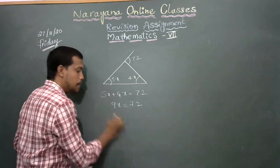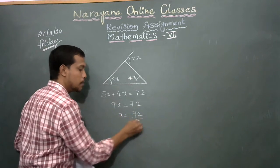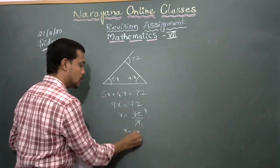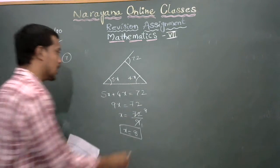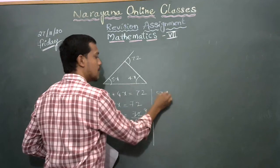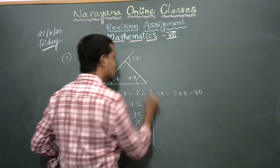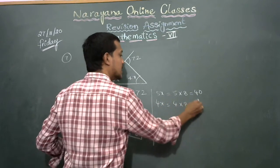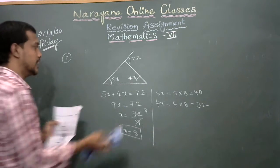Adding: 5x plus 4x gives 9x, which equals 72. Bringing 9 to the right-hand side by division: x equals 72 divided by 9, so x equals 8. Now, 5x equals 5 times 8 equals 40, and 4x equals 4 times 8 equals 32. Verification: 40 plus 32 equals 72.